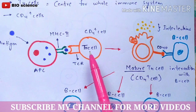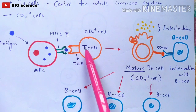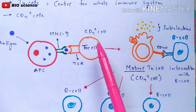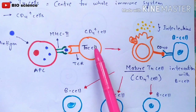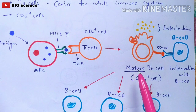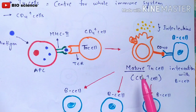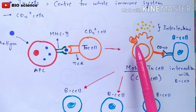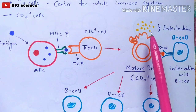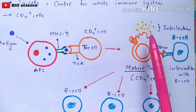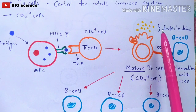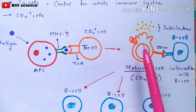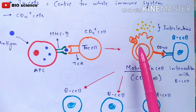Once the antigen is received by the T helper cell (CD4 plus cell), it becomes activated and matures into a mature T helper cell, also called a mature CD4 plus cell. Upon maturation, it starts releasing interleukins, which are also called cytokines. Interleukins fall under the classification of cytokines — a separate video on cytokines will be made for further understanding.